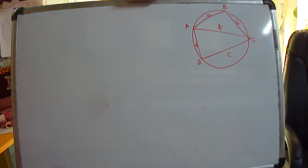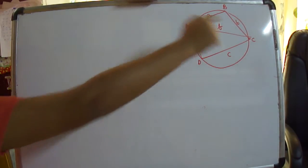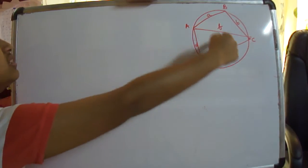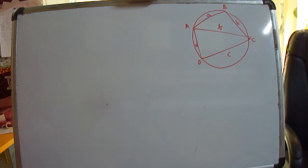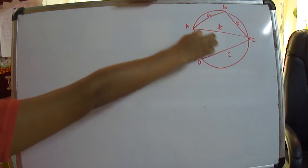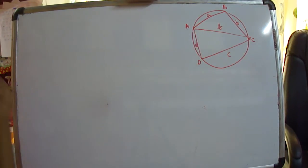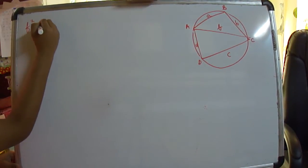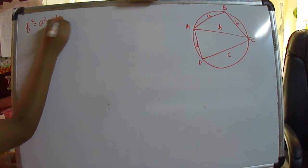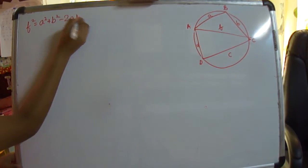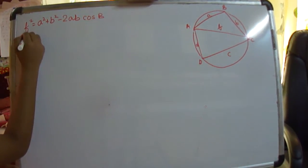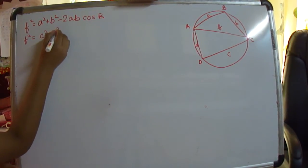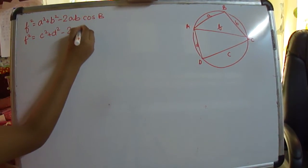Our first step is to consider a cyclic quadrilateral ABCD with sides A, B, C, and D, and diagonal AC equal to F. By applying the cosine rule in triangle ABC and triangle ADC, we can say that F² equals A² plus B² minus 2AB·cos B, and F² also equals C² plus D² minus 2CD·cos D.